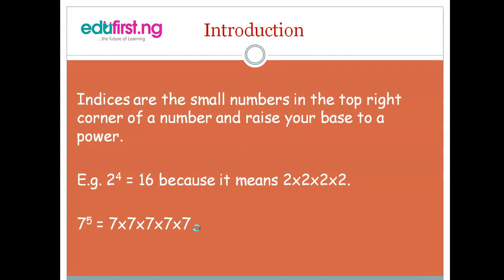Introduction: Indices are the small numbers in the top right corner of a number, raising your base to a power. For instance, 2 raised to the power of 4 is equal to 16, because it means 2 multiplied by 2 multiplied by 2 multiplied by 2 — that is 2 appearing in 4 places.